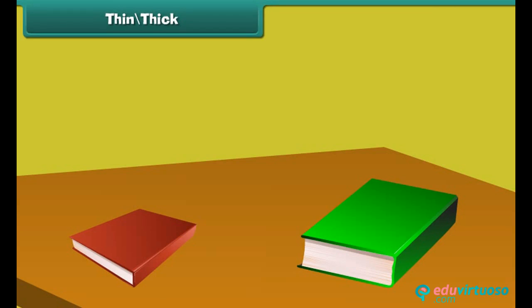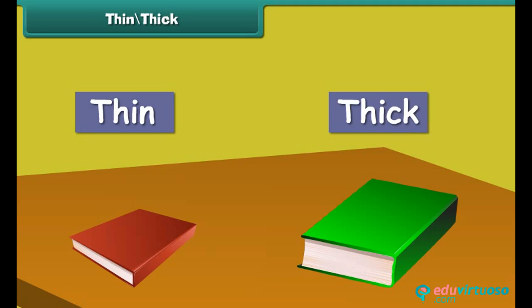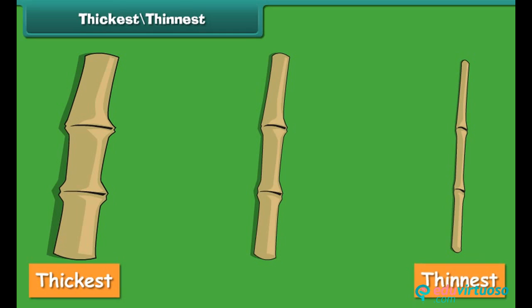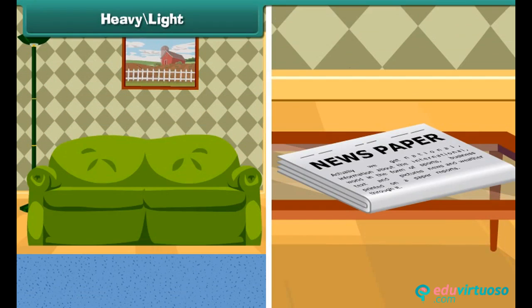The picture on the left is thin, and the picture on the right is thick. To compare the thickness of more than three objects, we use the words 'thickest' and 'thinnest.' The first stick is the thickest and the third stick is the thinnest.